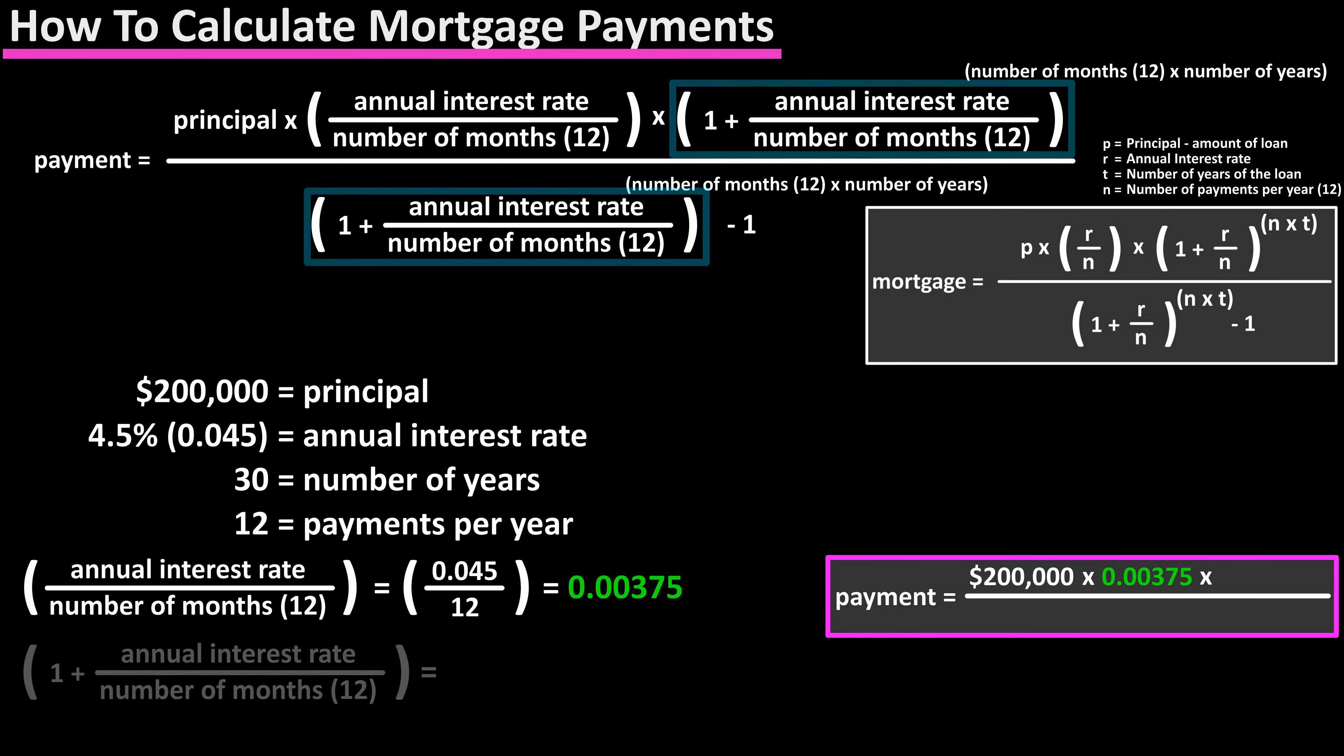Next in the formula we need to know 1 plus the annual percentage rate divided by the number of months in the year. We just calculated the annual percentage rate divided by the number of months in a year, so this is 1 plus 0.00375, which is 1.00375.